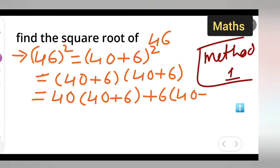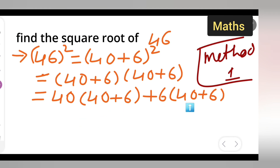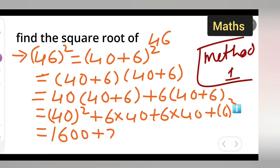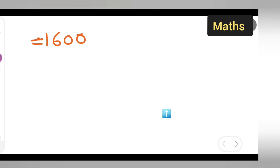I have written it twice because a square is there. Now, 40 into this entire term plus 6 into this — multiplying — gives 40 into 40, plus 40 into 6, plus 6 into 40, plus 6 into 6, which is 6 square. So: 40 square is 1600, 6 times 40 is 240, again 240, and 6 squared is 36.